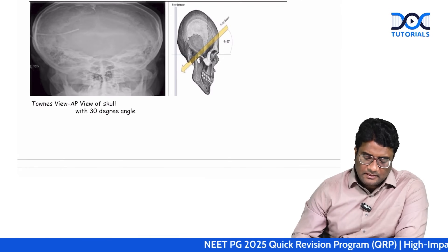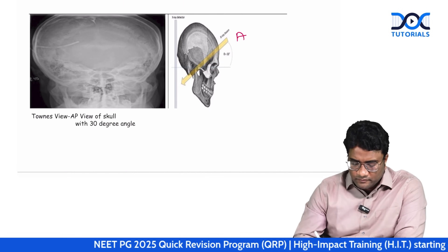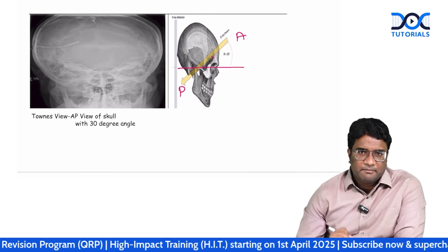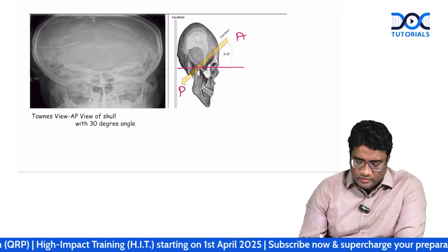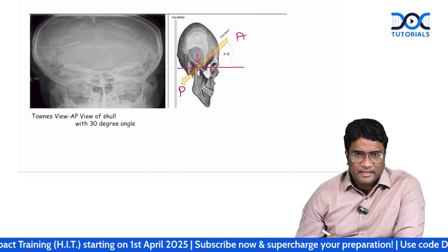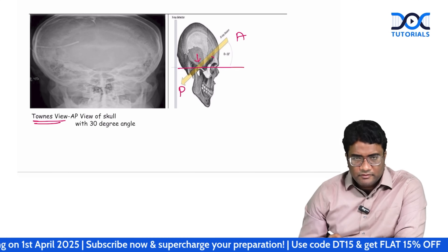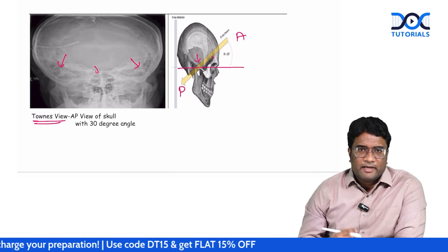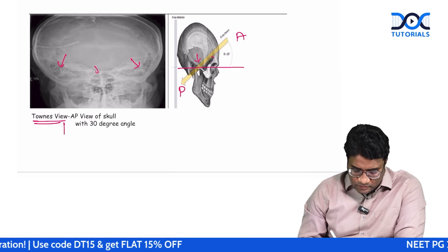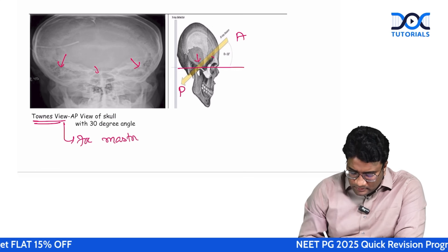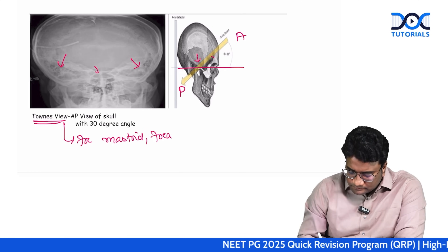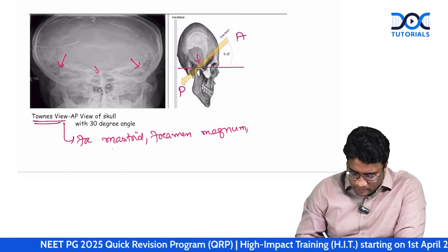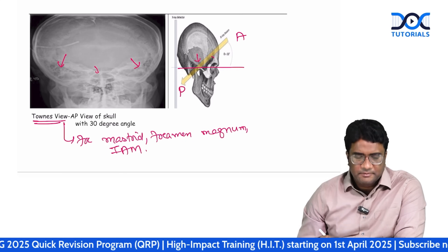Town's view is an anteroposterior view of the skull with a 30-degree angle to the baseline. This AP view also looks at the mastoid antrum and the internal auditory meatus. Town's view can show the mastoid air cells, part of the foramen magnum, and the internal auditory meatus.